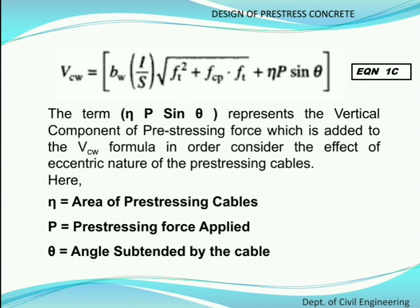In Equation 1c, μ is the area of prestressing cables, p is the prestressing force applied, and θ is the angle subtended by the cable. To summarize: Equation 1a is the basic formula; Equation 1b uses the factor 0.67 to directly replace I and S; Equation 1c is the most practical because it avoids the conservative 0.67 factor. Equation 1c is particularly important for flanged sections such as I-sections or T-sections.